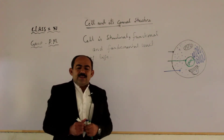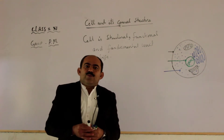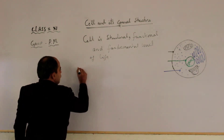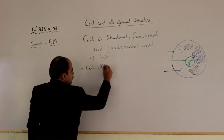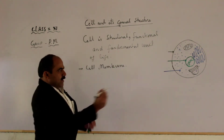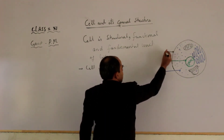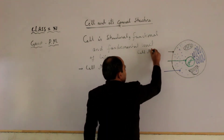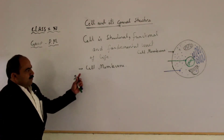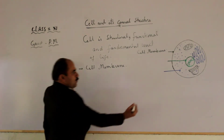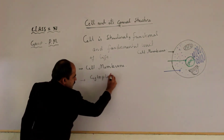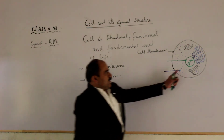Today we discuss the general and basic structure of the cell. A cell is made up of four major components. The first is the cell membrane. As we can see in the diagram, this structure is known as the cell membrane.